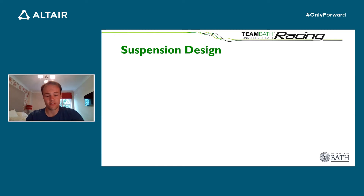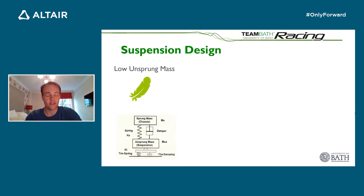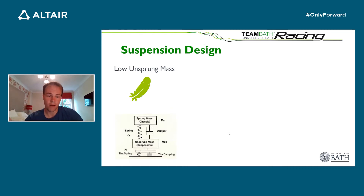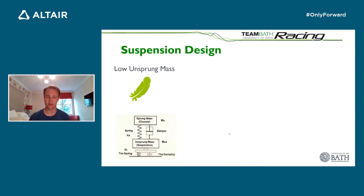A little aside on suspension design. The main target when designing the suspension system is to have low unsprung mass — anything directly in contact with the track not supported by the vehicle springs, such as the tyre, wheel, upright, brakes, and wishbones. You want this as low as possible because if you model the car as a spring-mass-damper system, a high unsprung mass means when a tyre goes over a bump, it takes much longer to return to the track, giving reduced grip during that period and a much more unsteady feel that affects the driver and overall handling ability.